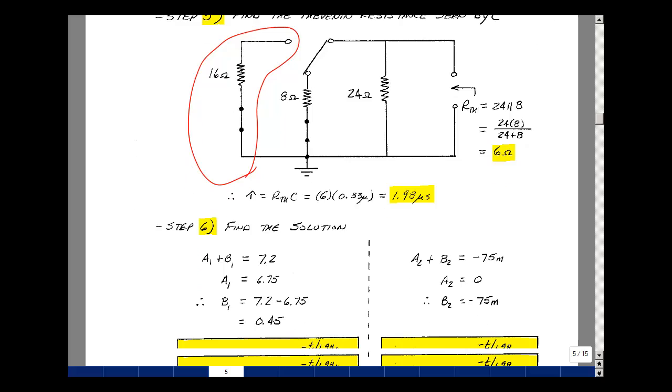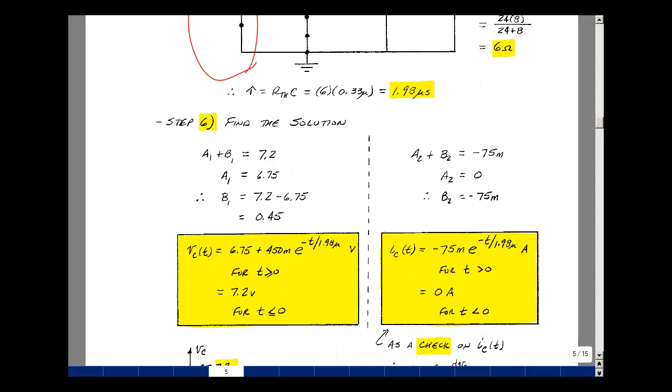I can put it all together and find the solution. So for the capacitor voltage, we had that a1 plus b1 was 7.2. We had a1 was 6.75, so b1 then is equal to 7.2 minus 6.75, and that's 0.45.